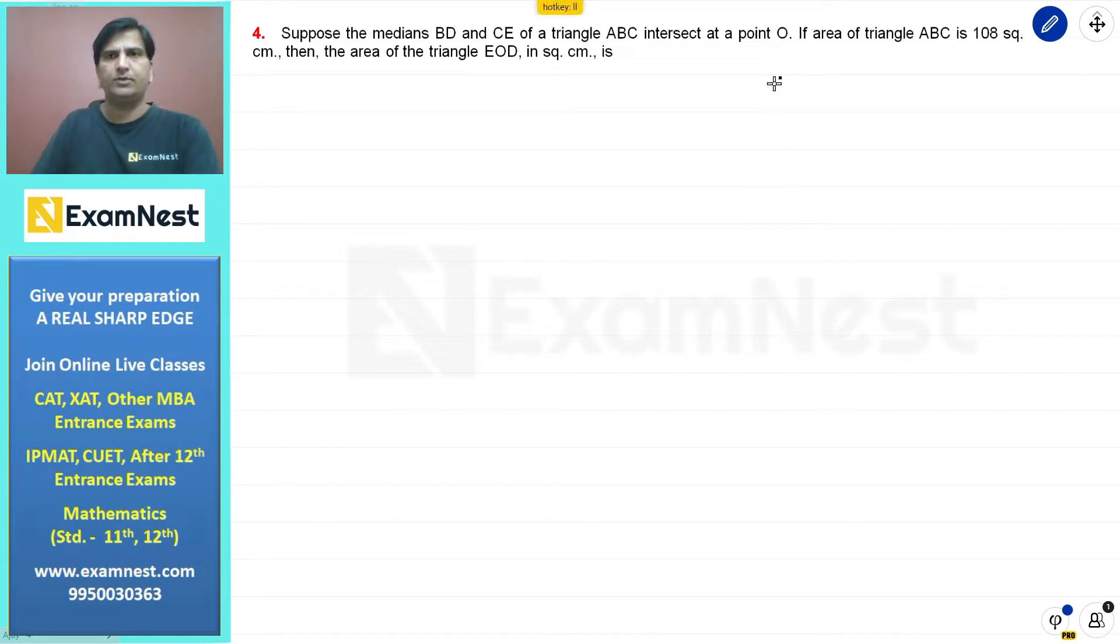Suppose the medians BD and CE of a triangle ABC intersect at a point O. First of all, we have a specific triangle. Let us say here we have a triangle A, B, C.